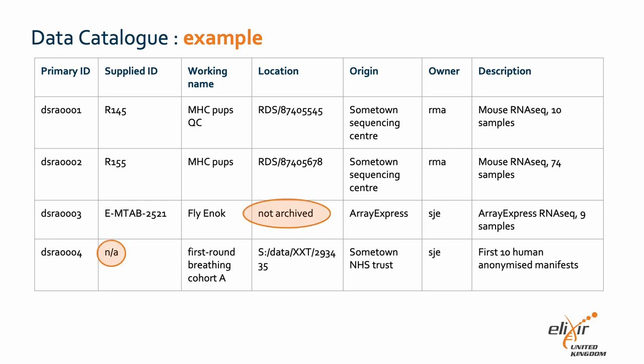An important thing to note when creating and updating data catalogues: avoid having blank or null values, as this avoids any confusion. For example, a zero is different from a blank cell — zero is considered actual data, while a blank cell can be interpreted as missing, wasn't collected, unknown, etc. In the data catalogue example, the last row of supplied ID has 'not available', and in the third row of location the content is 'not archived', to avoid leaving blank cells.